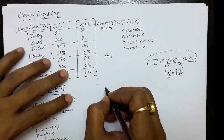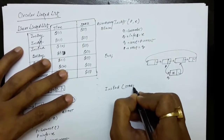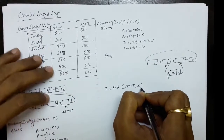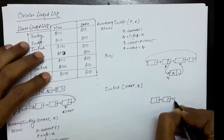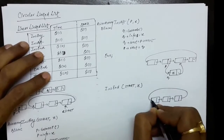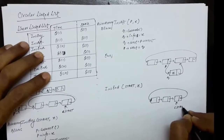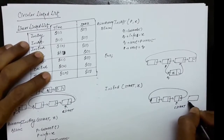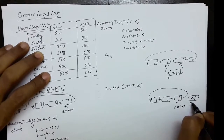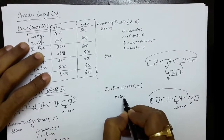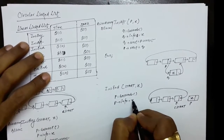Now let us write the insert end operation. Insert end is very interesting — let us see if you can find an improvement over the linear linked list. Suppose this is the circular linked list and C start is here. We need to insert a node with information X after this last node. We call P equals to get node, then set P dot info equals to X.